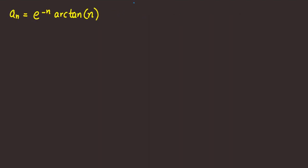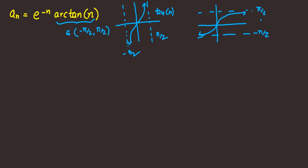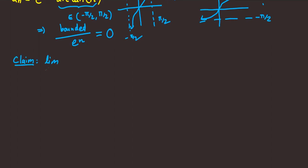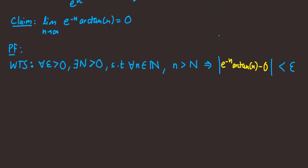For this example, recall the tangent graph is an infinite sequence of the same repeating shape. When we take the graph of arctan, we restrict it between -π/2 and π/2, so the highest possible value of arctan is π/2, achieved as n goes to infinity. Therefore we have something bounded over e^n, so the limit should be 0. We use the limit definition again.